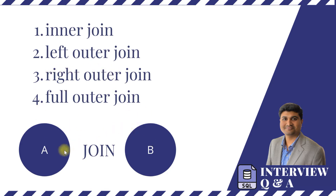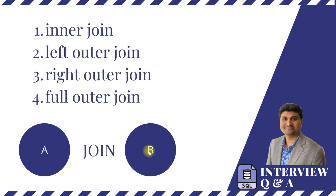Right outer join is exactly the opposite — all the data from Table B will be picked up, which is 90 in our example, and only the matching data from Table A will be retrieved. It depends on the requirement and what type of data you want to pick from each table. You can also have multiple tables in joins; it's not just limited to two tables.